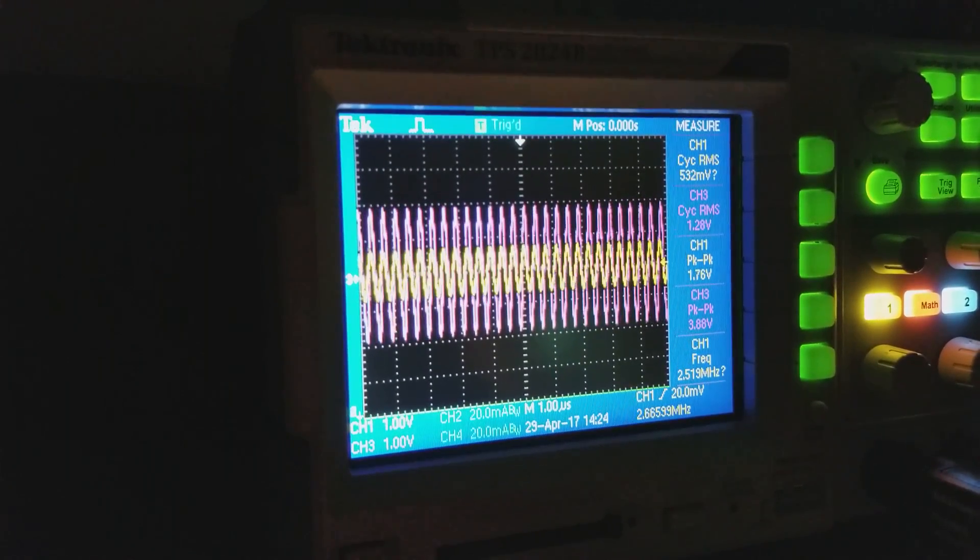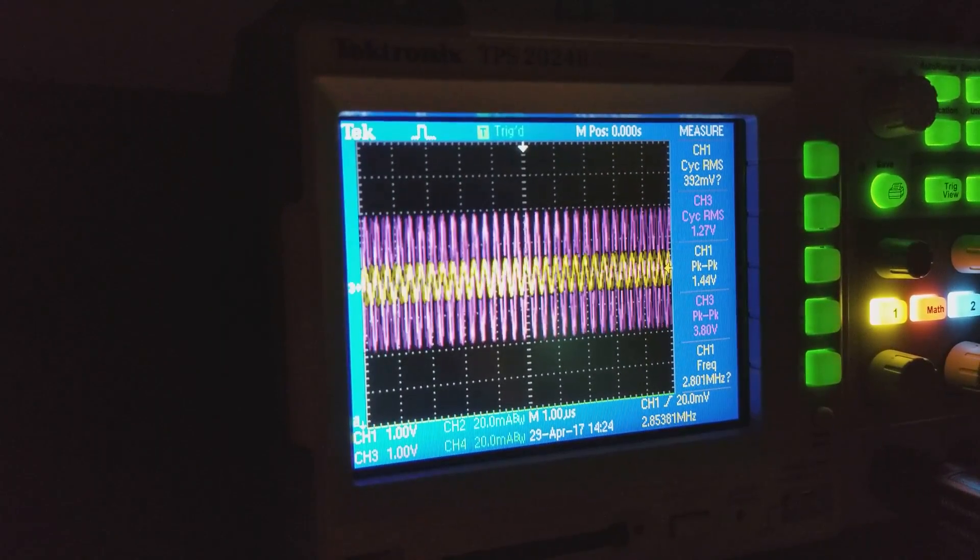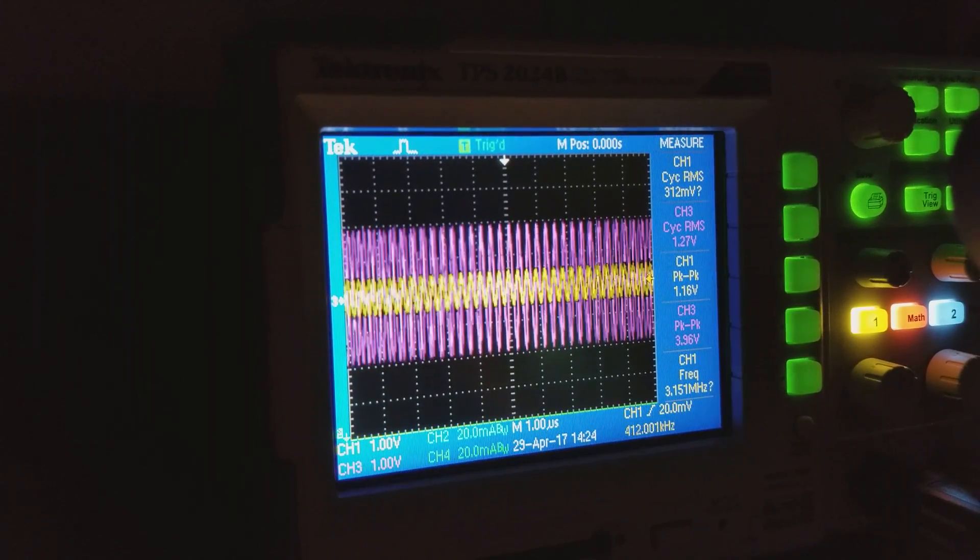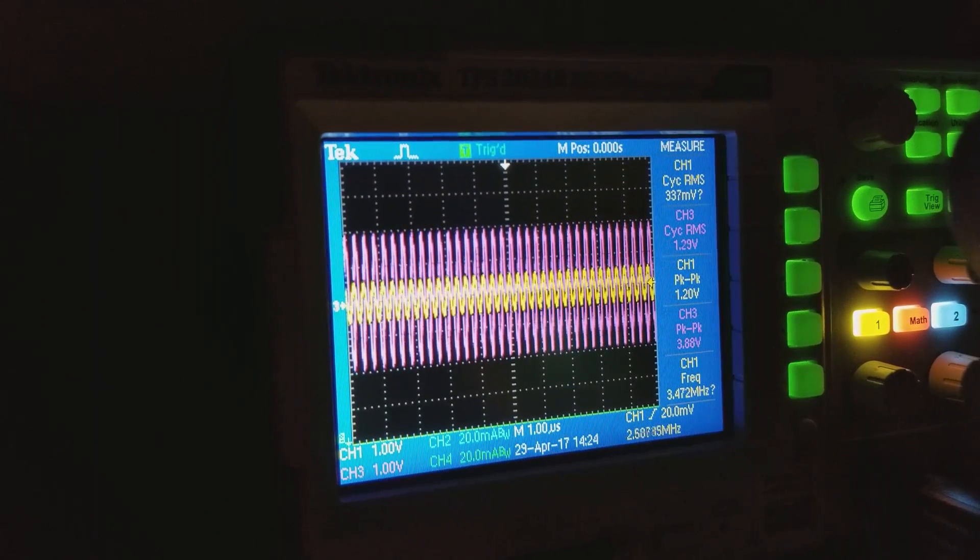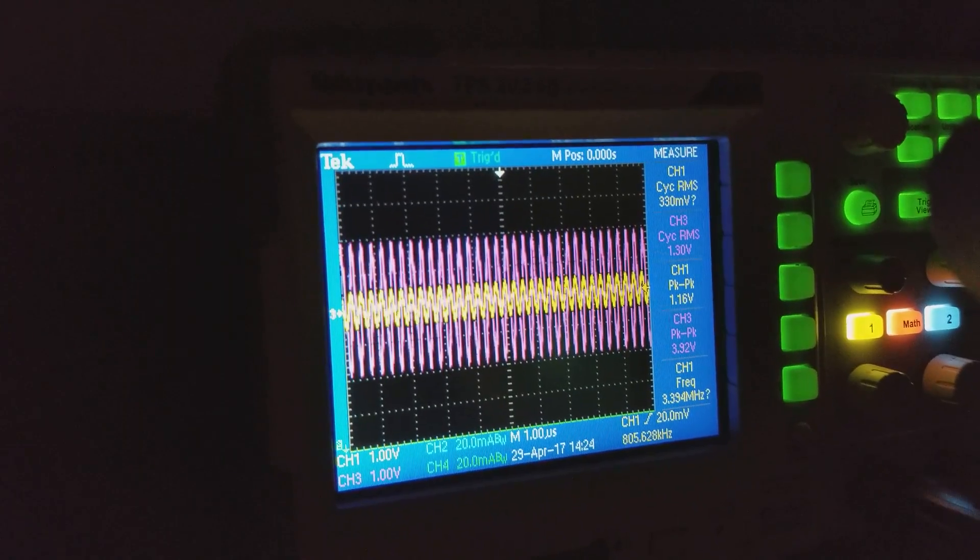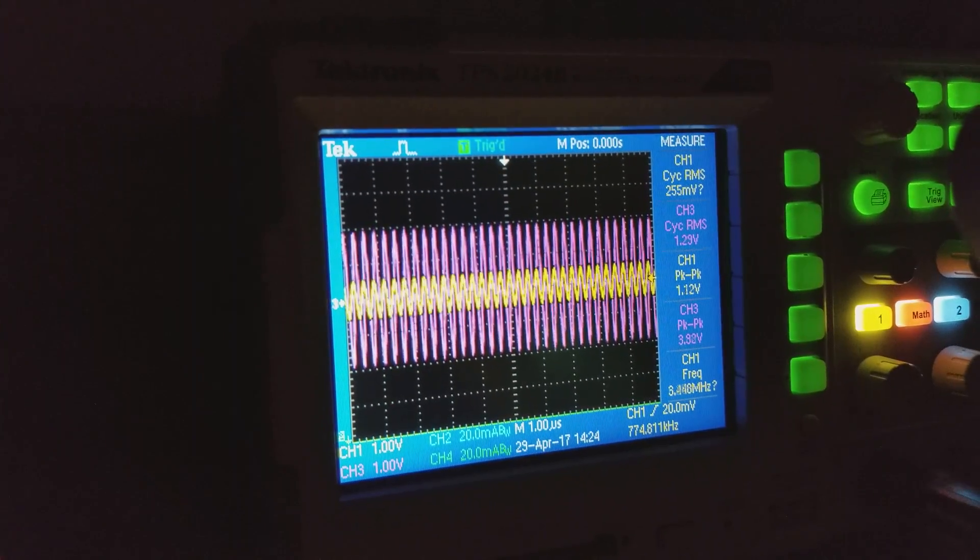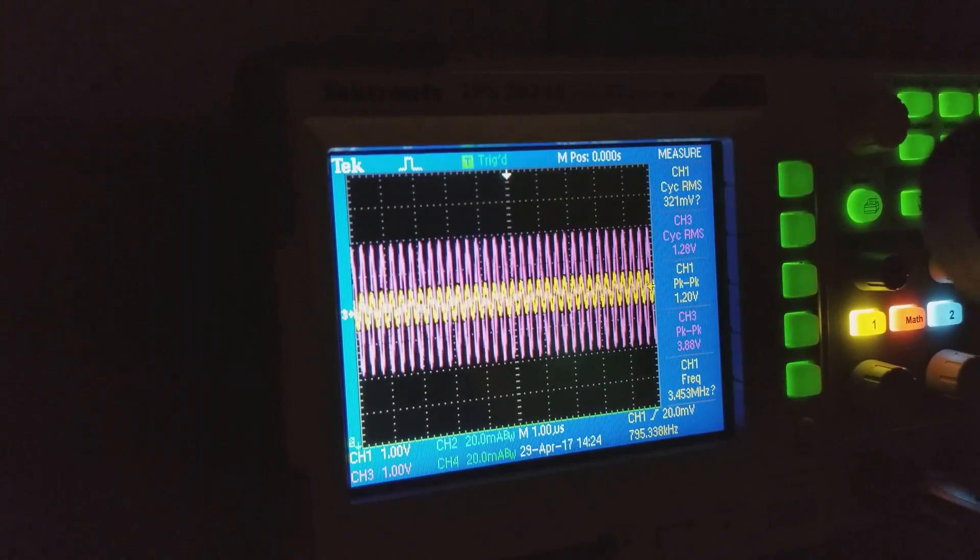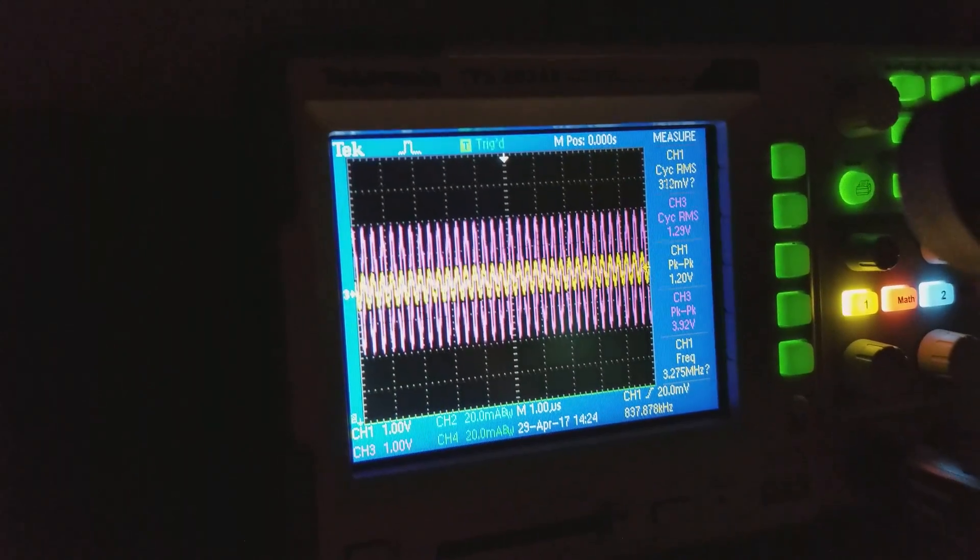Now look at our input RMS. I'll zoom in on this stuff later, but look at that. We're at just over 300 millivolts input and 1.29 volts RMS output. So there's your current amplification.